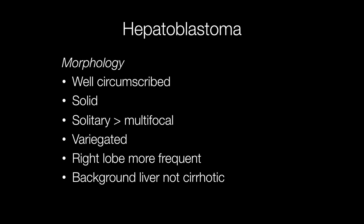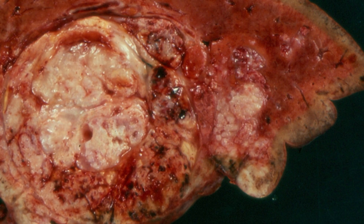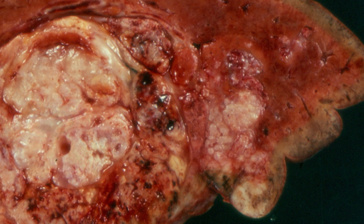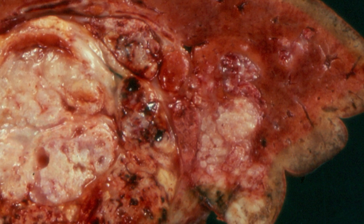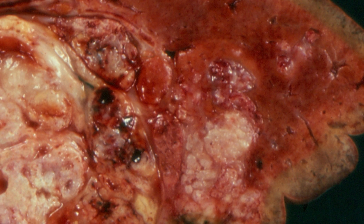Grossly, hepatoblastomas are well-circumscribed, rather lobulated tumours with a solid and variegated cut surface. They occur more frequently in the right lobe, the background liver is not cirrhotic, and solitary tumours are more frequent than multifocal tumours. This gross specimen shows a solid tumour with a variegated, well-circumscribed but lobulated appearance, and the adjacent liver is normal and not cirrhotic.